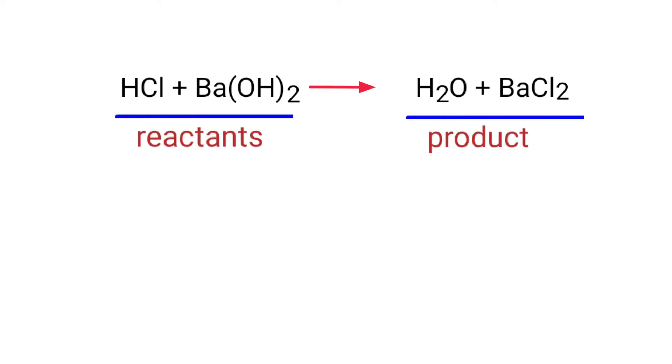In this equation, the reactants are hydrogen chloride and barium hydroxide, and the products are water and barium chloride. If you look at this equation, the equation is not balanced.